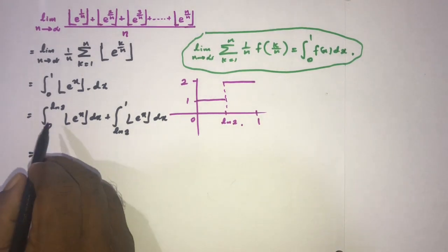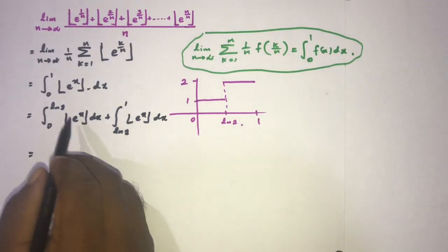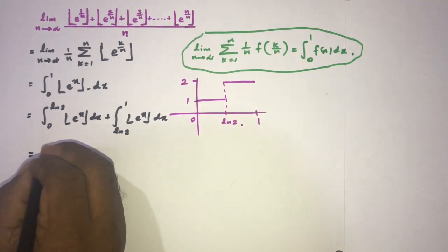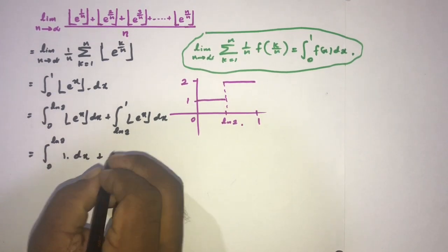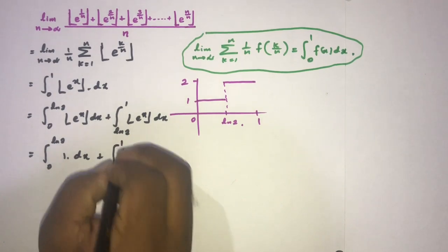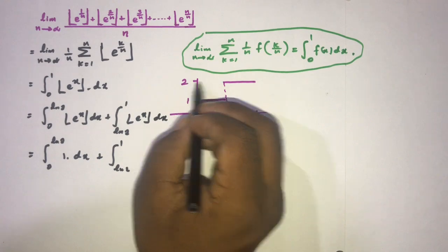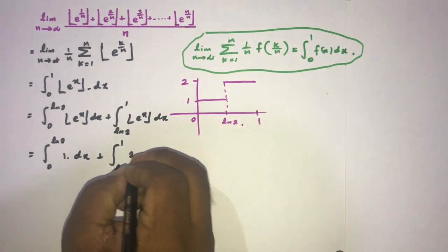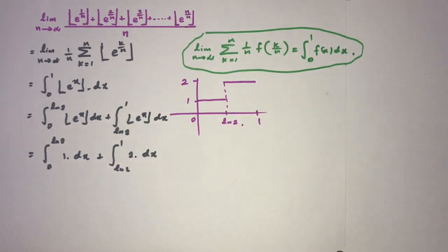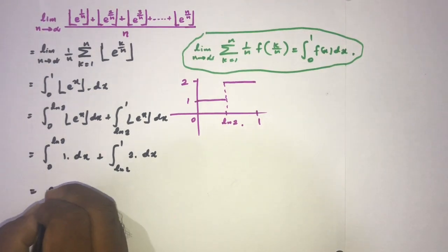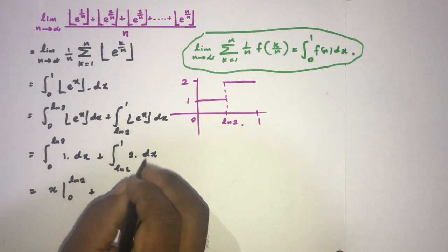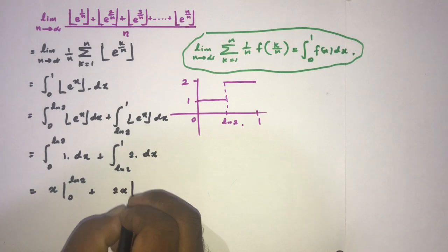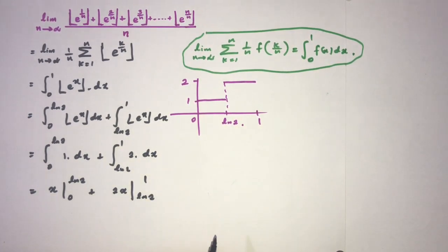Then now we know 0 to natural log of 2 floor of e to the x is equal to 1. So here we have 0 to natural log of 2, 1 times dx plus now natural log of 2 to 1. Here we have integral 0 to natural log of 2 plus 2 times x from natural log of 2 to 1.